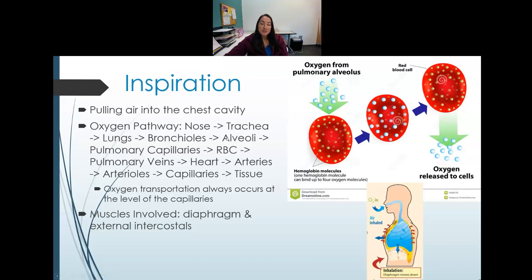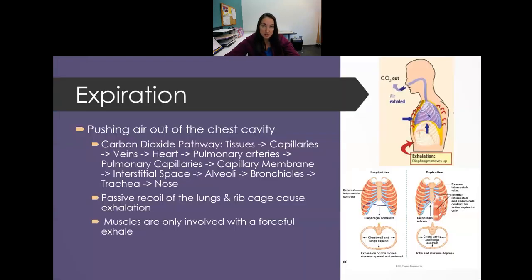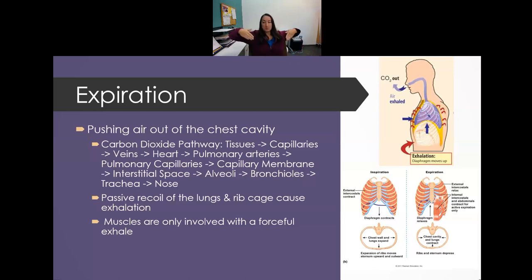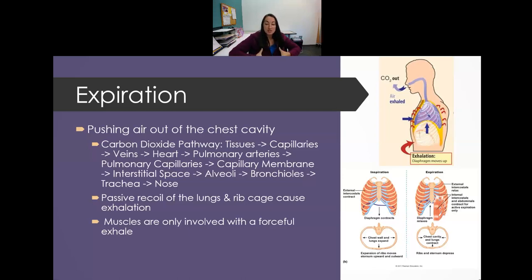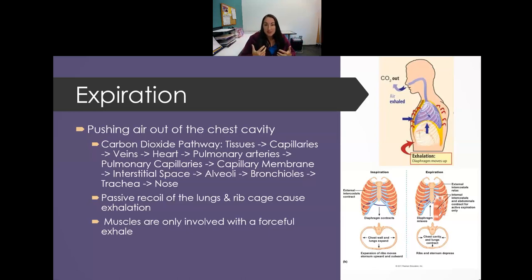During inspiration, the primary muscles involved are the diaphragm and the external intercostal muscles. The external intercostals are like having your hands in your pockets — the fibers go down and in, so when they contract they pull the rib cage up and out. The chest wall expands, creating negative pressure that pulls air in.